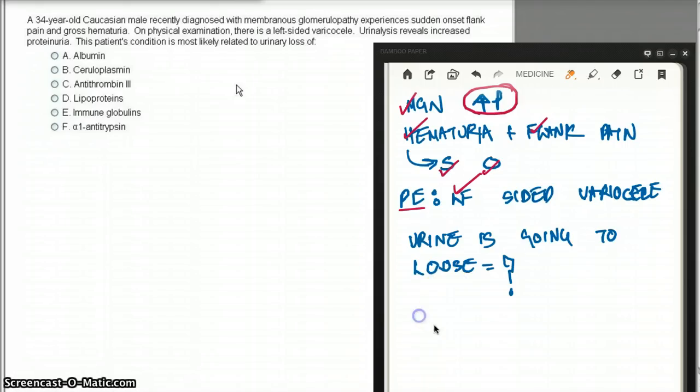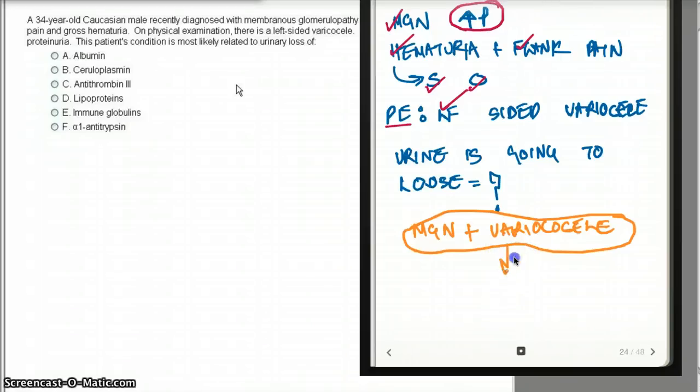The patient has MGN plus varicocele. They might be related. The varicocele might be related to the MGN. And if there is a relationship, what would we lose in our urine? That's the question they are posing.